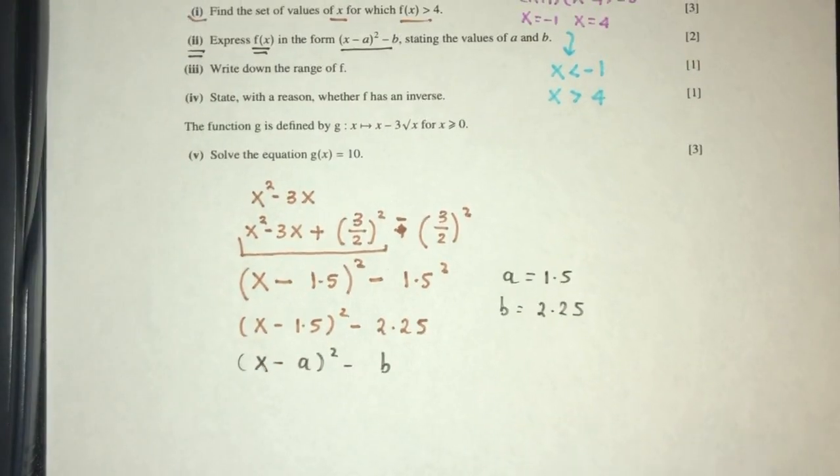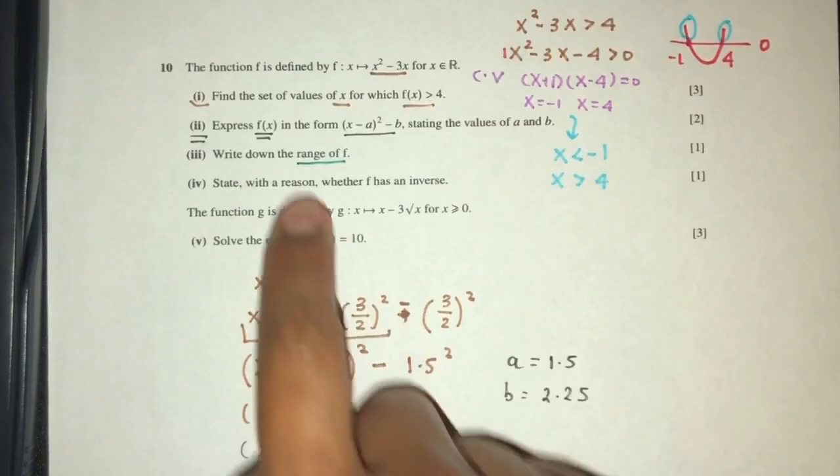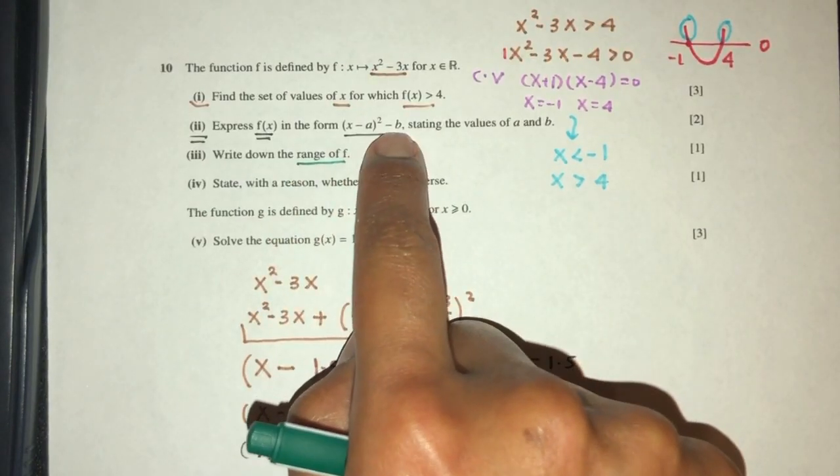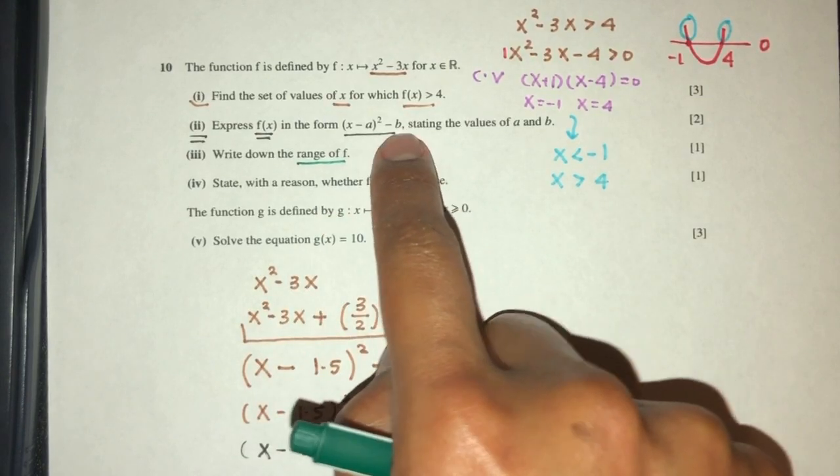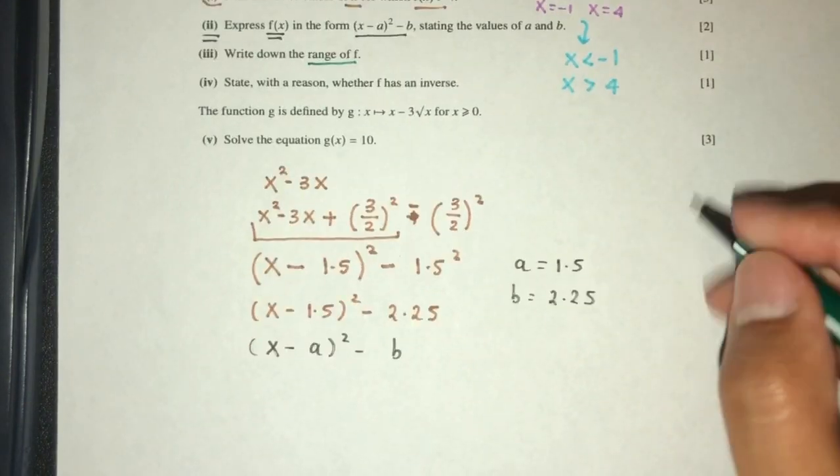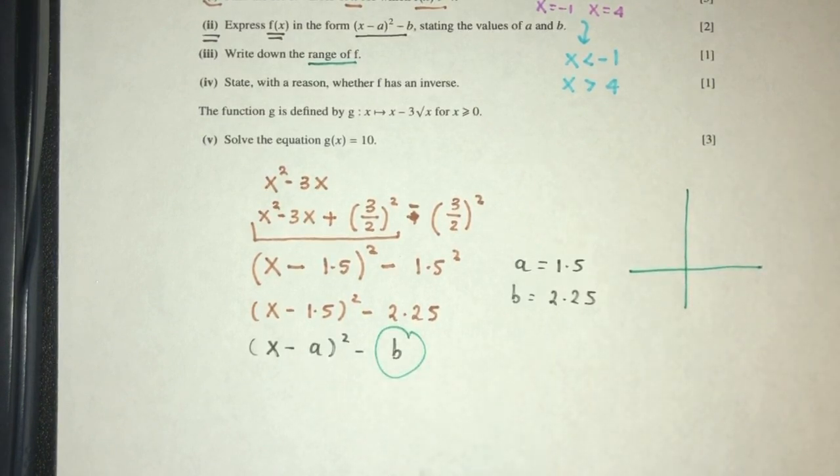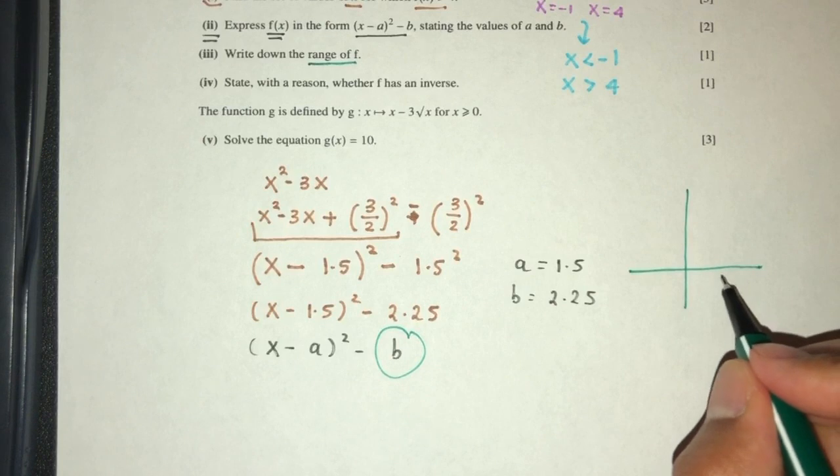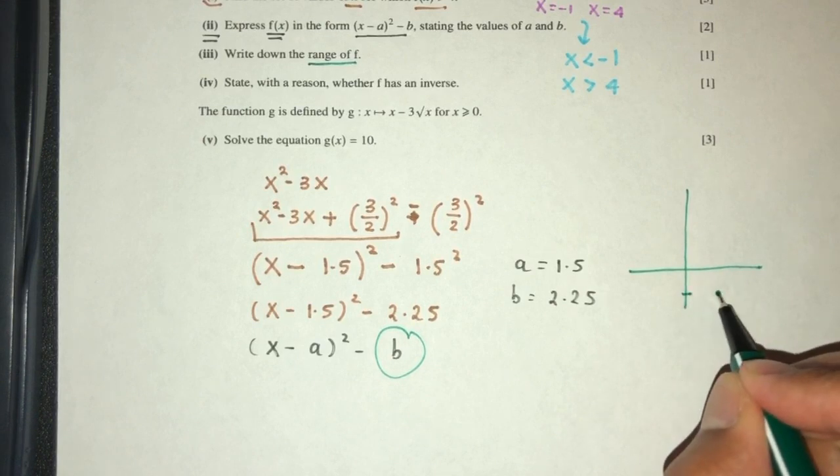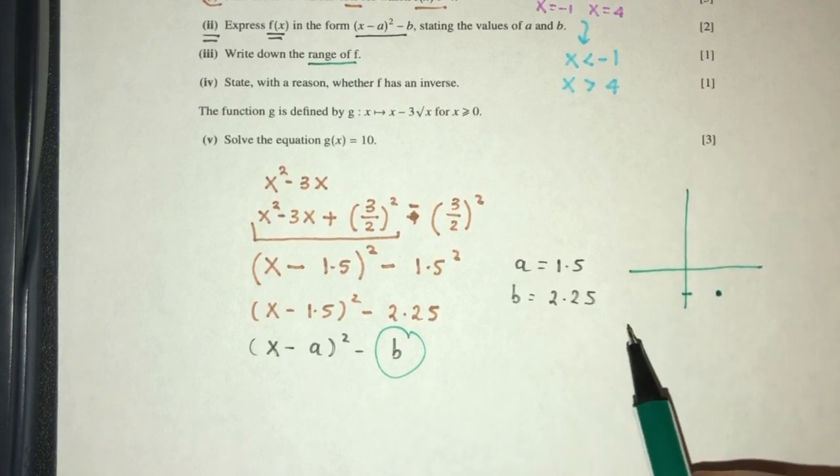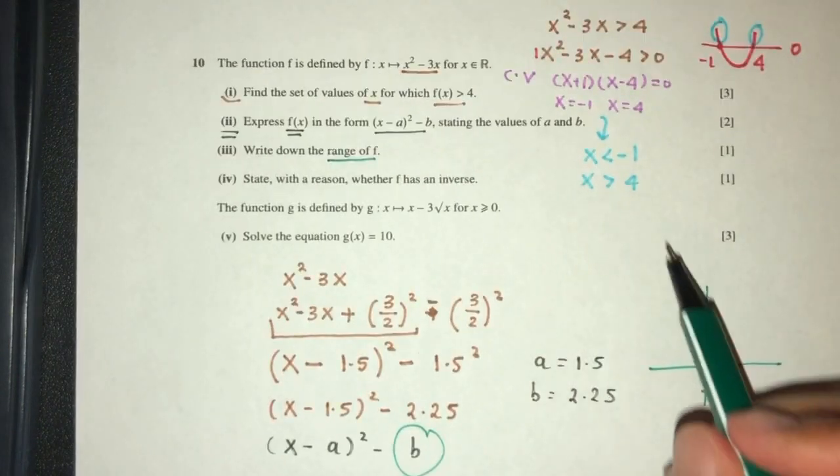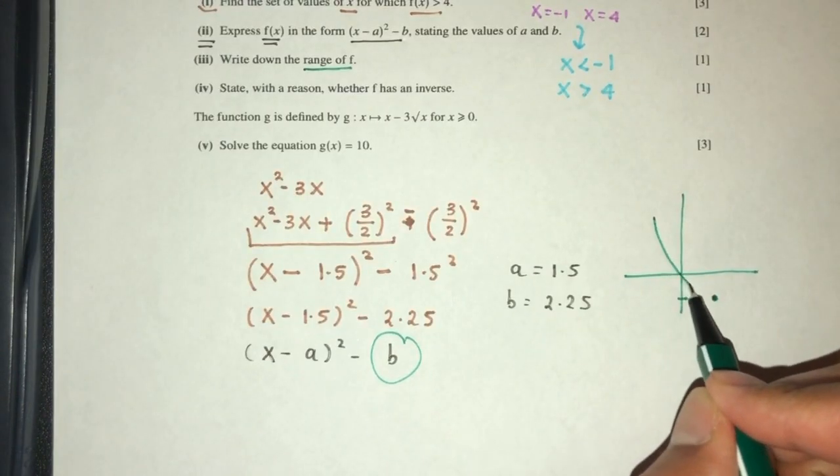Now for part three, write down the range of f. The range are the y values of f. So we kind of have to know an idea what is the shape of the curve. Now again, the reason why the question was asked after this one, it means, usually means we can use this one to find the answer. So we kind of have to know that the value here at the end here is your minimum value. So here we have minus 2.25 as the minimum value here. The shape of the graph is something like this. So the graph will be something like this.